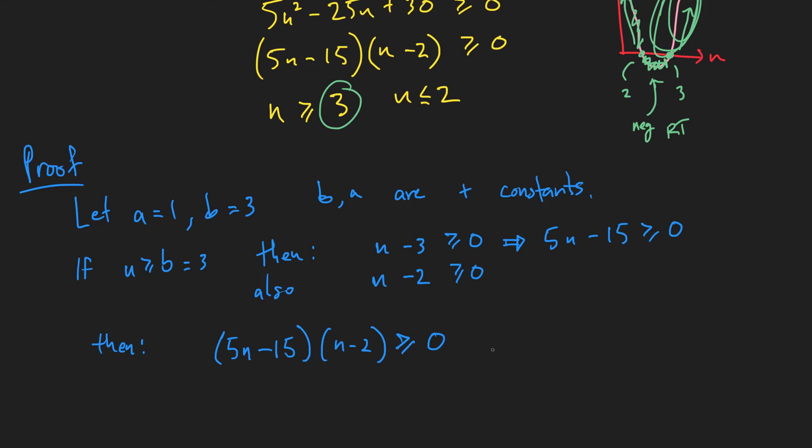And now, if we continue on here, then we can multiply this out, and we have 5n squared minus 25n plus 30 is greater than or equal to 0.